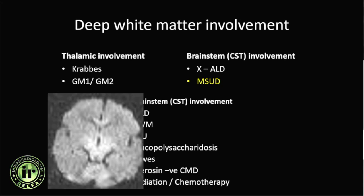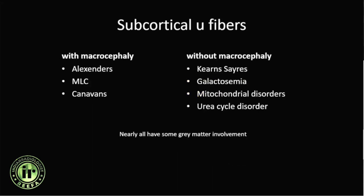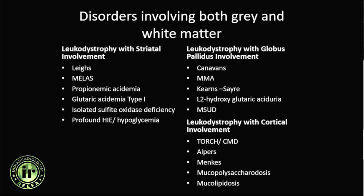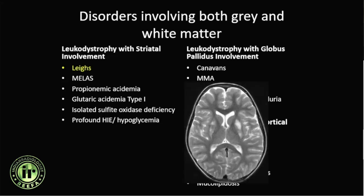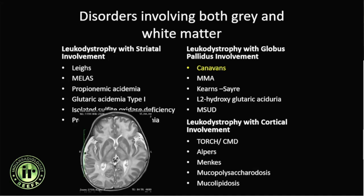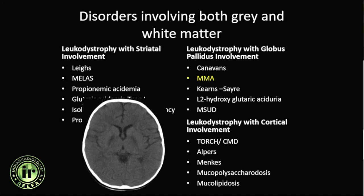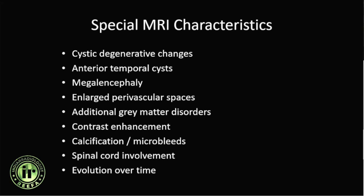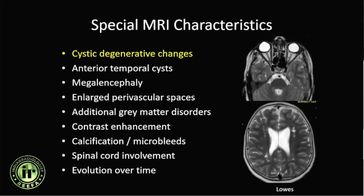GM2 gangliosidosis can have diffuse thalamic hypointensity and basal ganglia hyperintensity. Brainstem involvement and involvement of the corticospinal tract is seen in MSUD. Subcortical U-fibers may be associated with or without macrocephaly. Some disorders involve both gray matter and white matter — striatal involvement can indicate LEAS syndrome or other mitochondrial disorders, while globus pallidus involvement is seen in Canavan's disease. Globus pallidus involvement is also seen in methylmalonic acidemia.